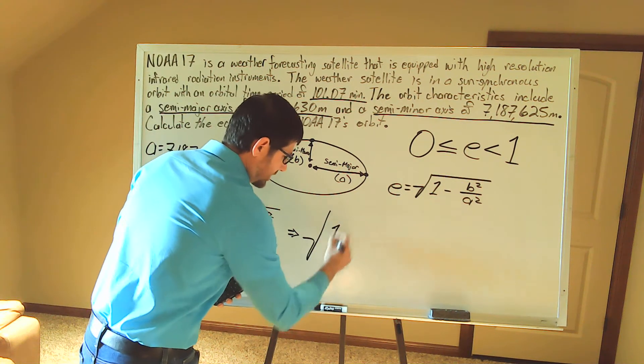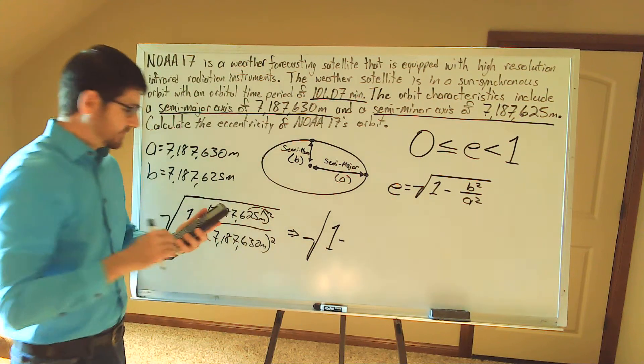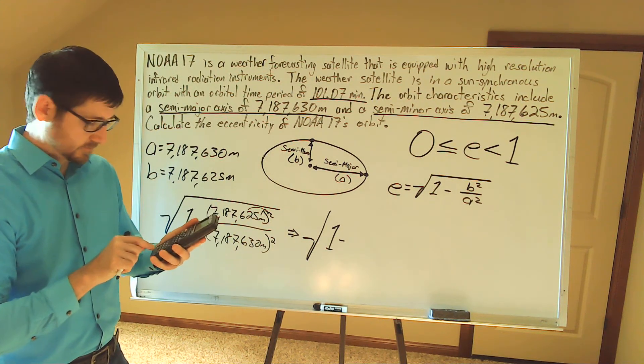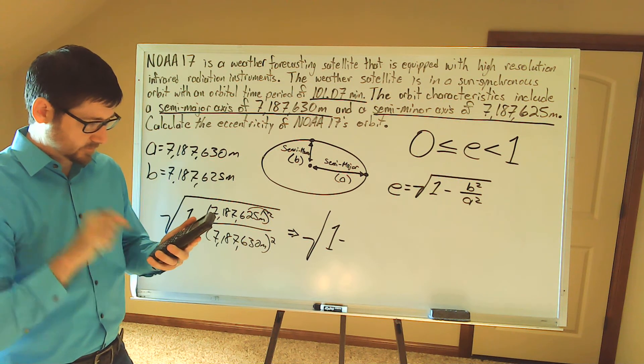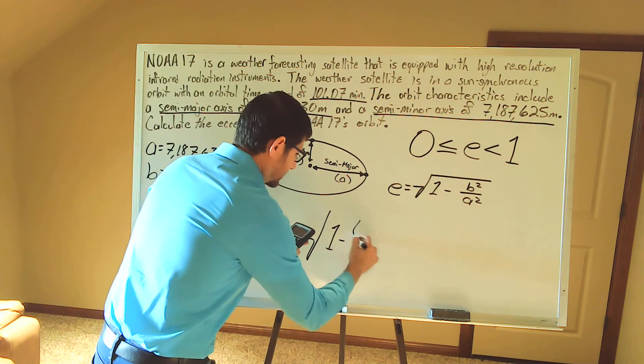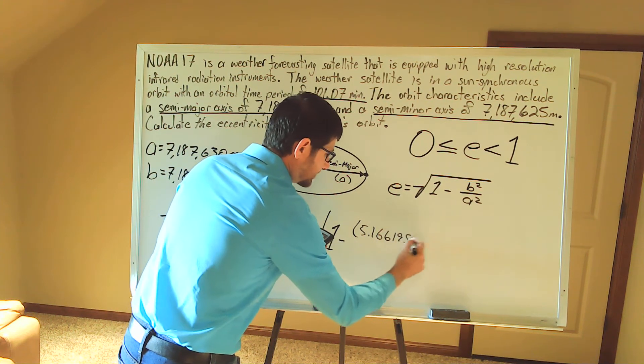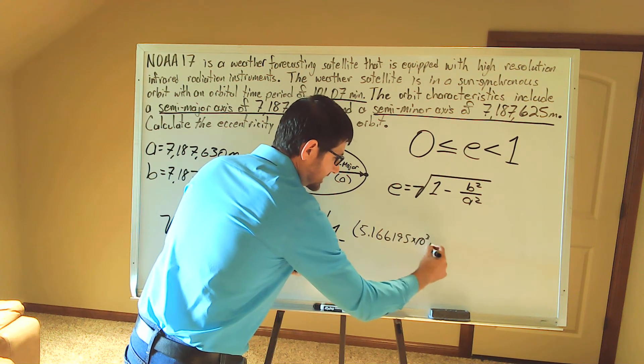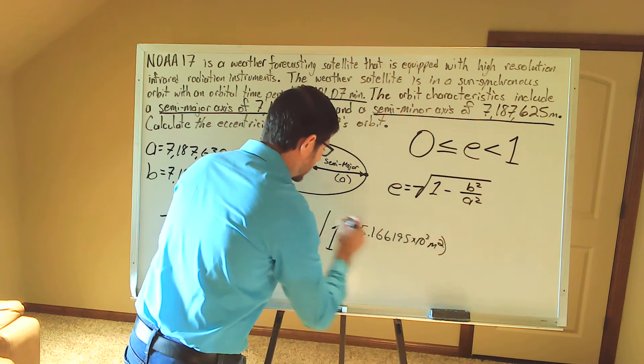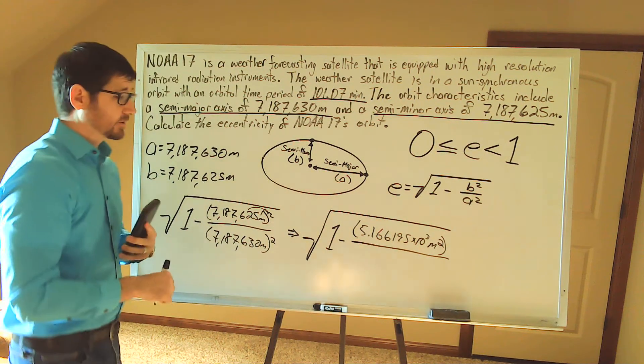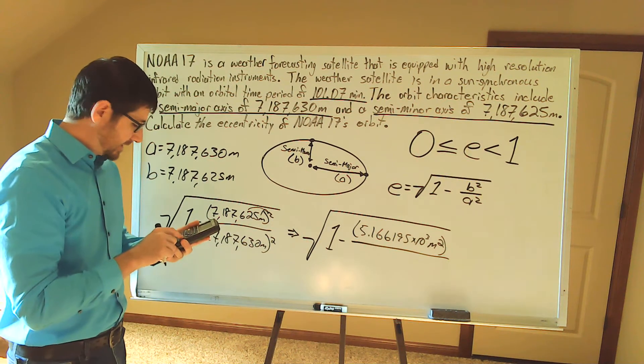So I have the square root of 1 minus, in my numerator, 5.166195 times 10 to the 13th meters squared. Remember, not only are we squaring the numerical value, we're also squaring the unit value. In my denominator...